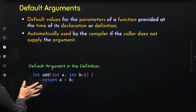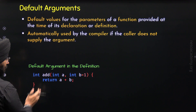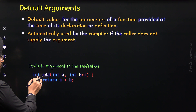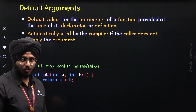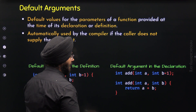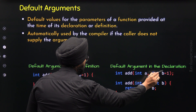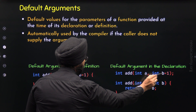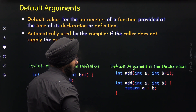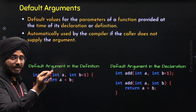This is the definition of the add function. Here we can observe the body of this function returns a plus b, so this function will return the result of a plus b. As mentioned already, we can provide a default argument to a specific parameter at the time of the definition of the function. Or we can provide the default argument at the time of declaration. Here is the declaration of the add function — you can observe the semicolon at the end. The default argument to parameter b has been passed at the time of declaration. Here is the definition of this function, and in the definition the default argument is not provided to b.